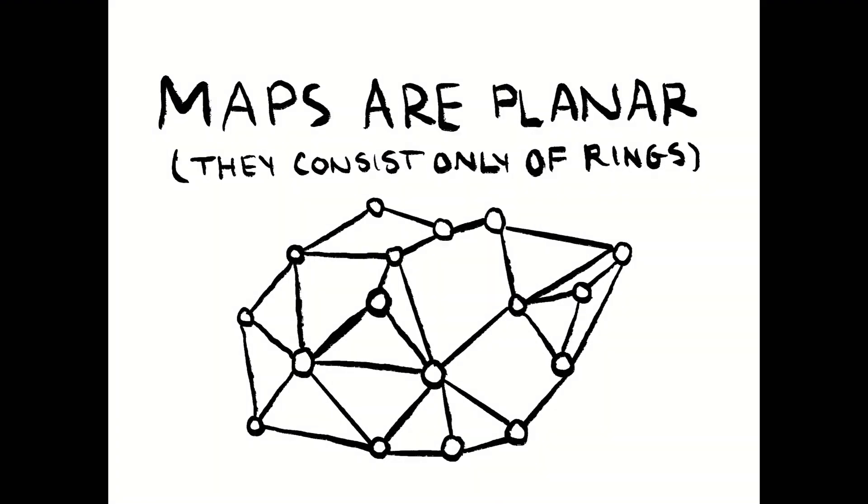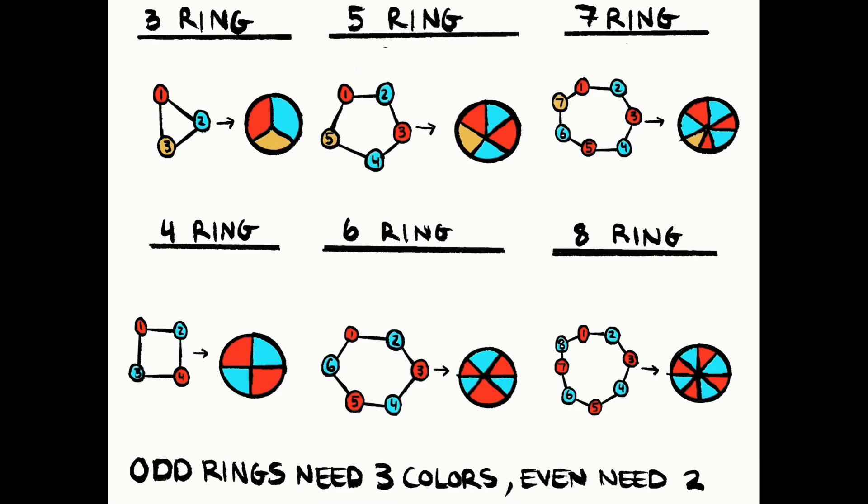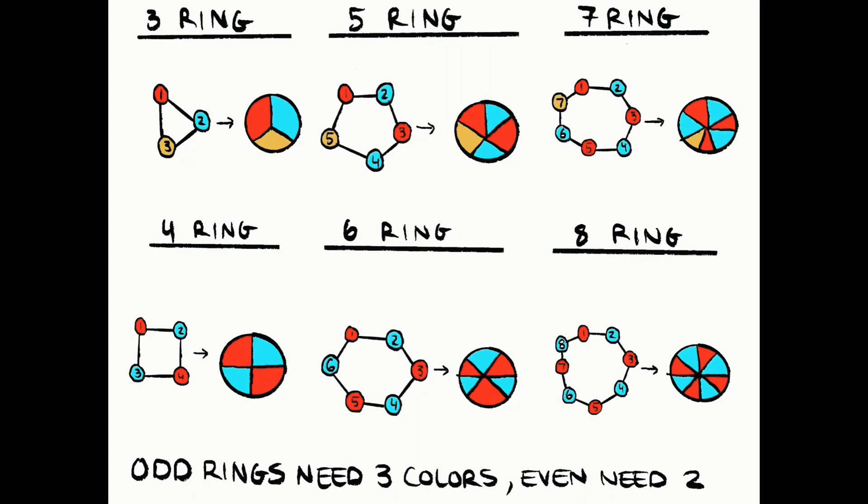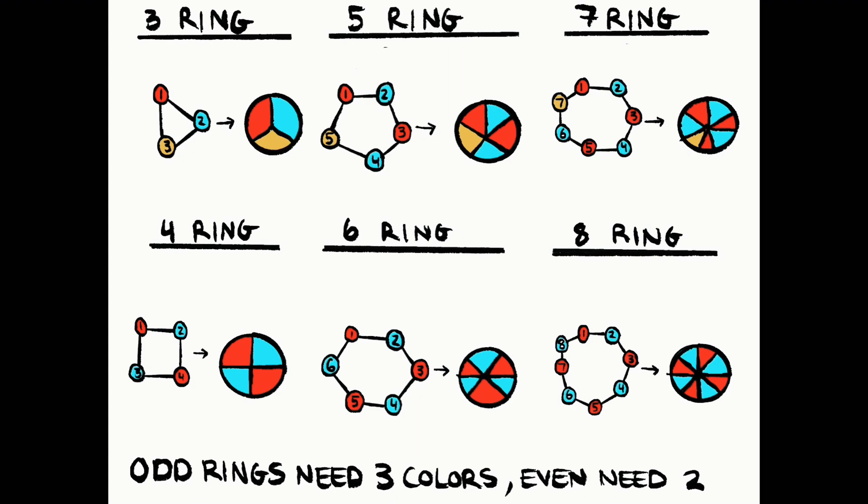If map-to-graph structures cannot have any crossings, they must only consist of interconnected rings, as discussed earlier. We found that these rings need two colors if they have an even number of vertices, and three if they have an odd number of vertices.